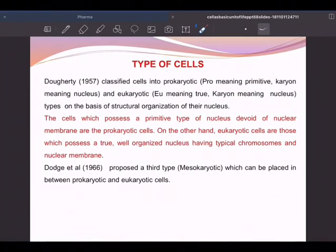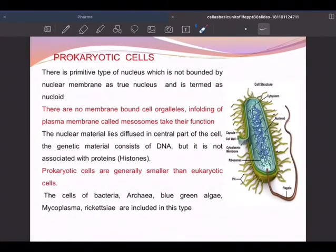In eukaryotic cell, on the other hand, eu means clear, true. Karyon means nucleus. So eukaryotic cell is a cell in which nucleus is very clear. So there are two types of cells broadly based on whether the nucleus is clear or not. And there's a proposed one, mesokaryotic, which can be placed in between.